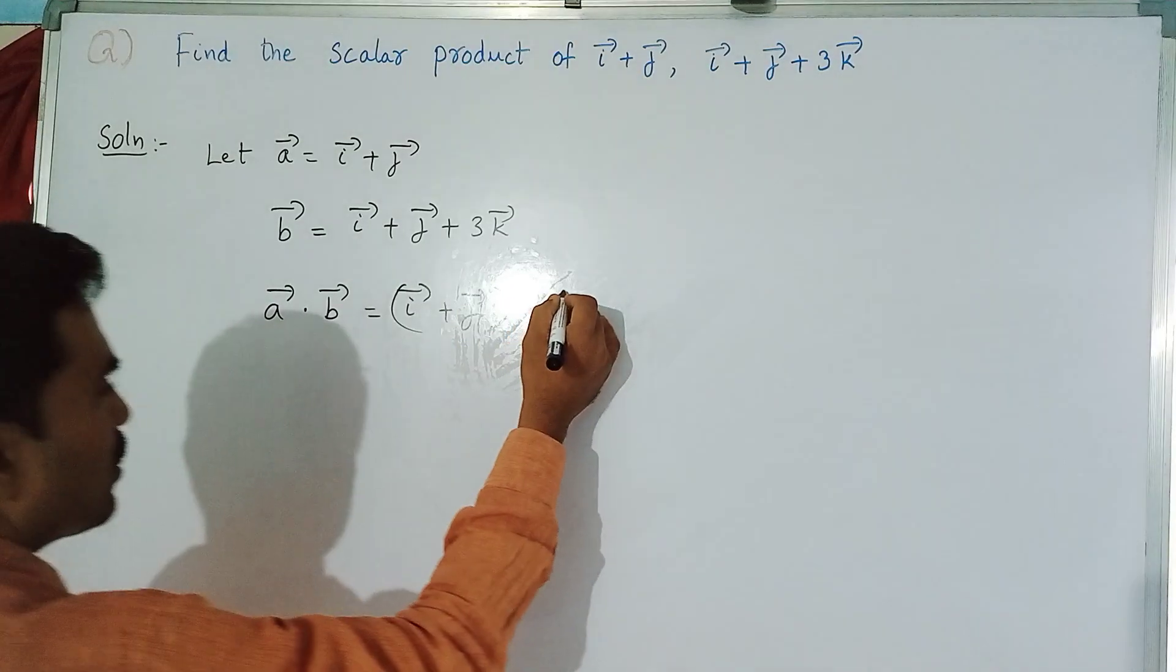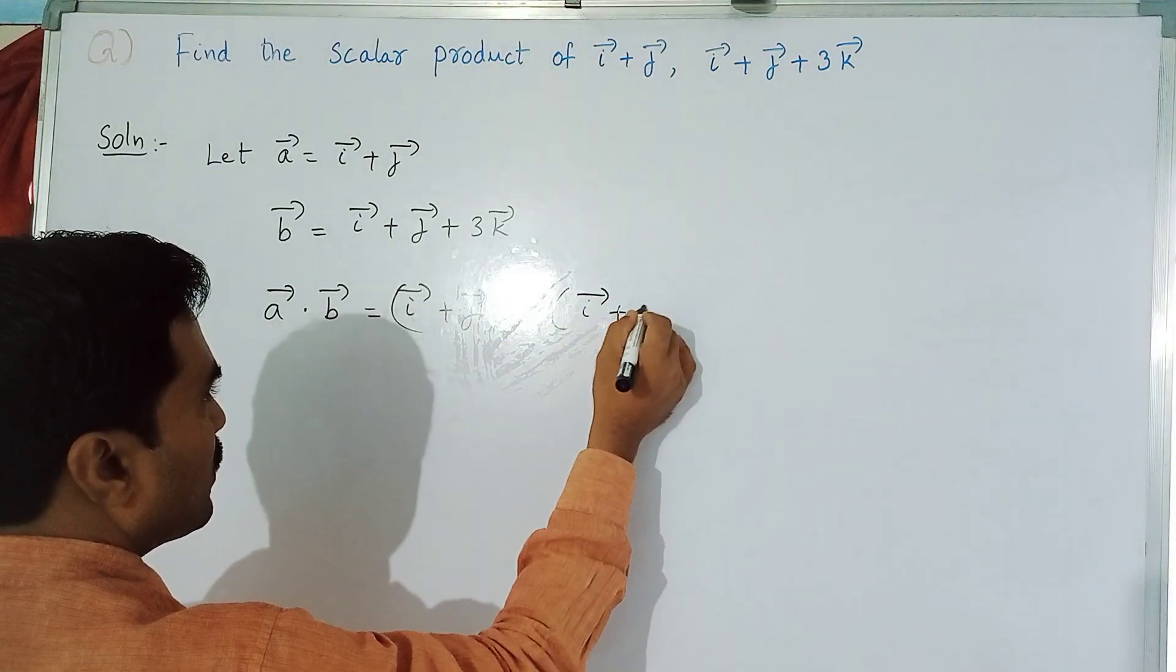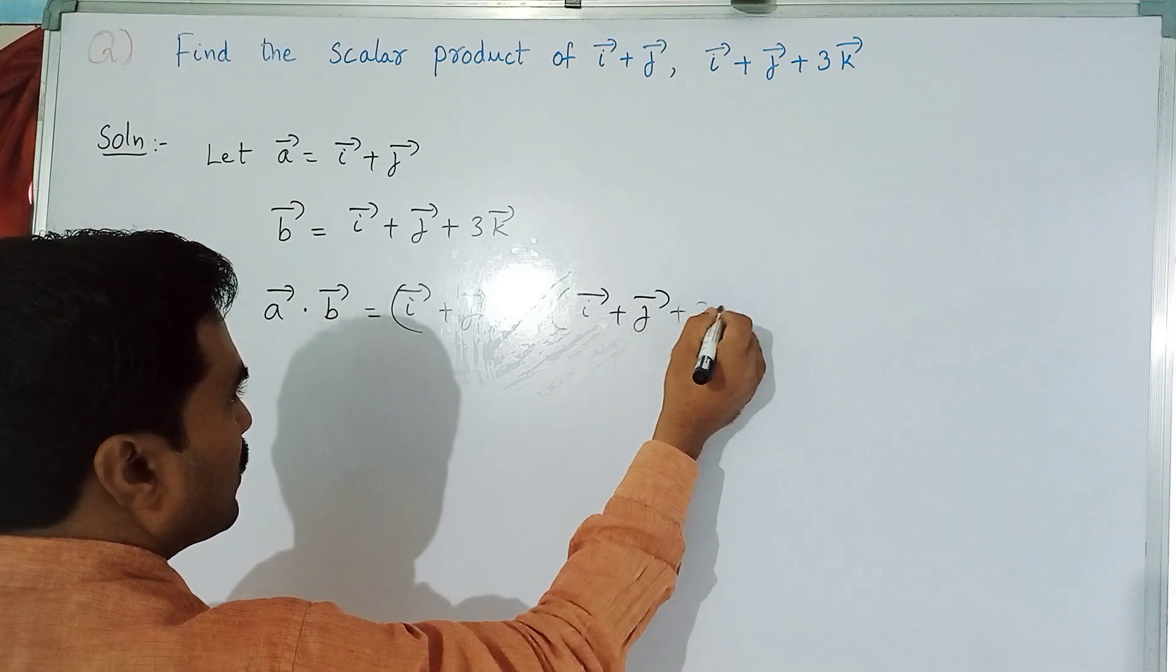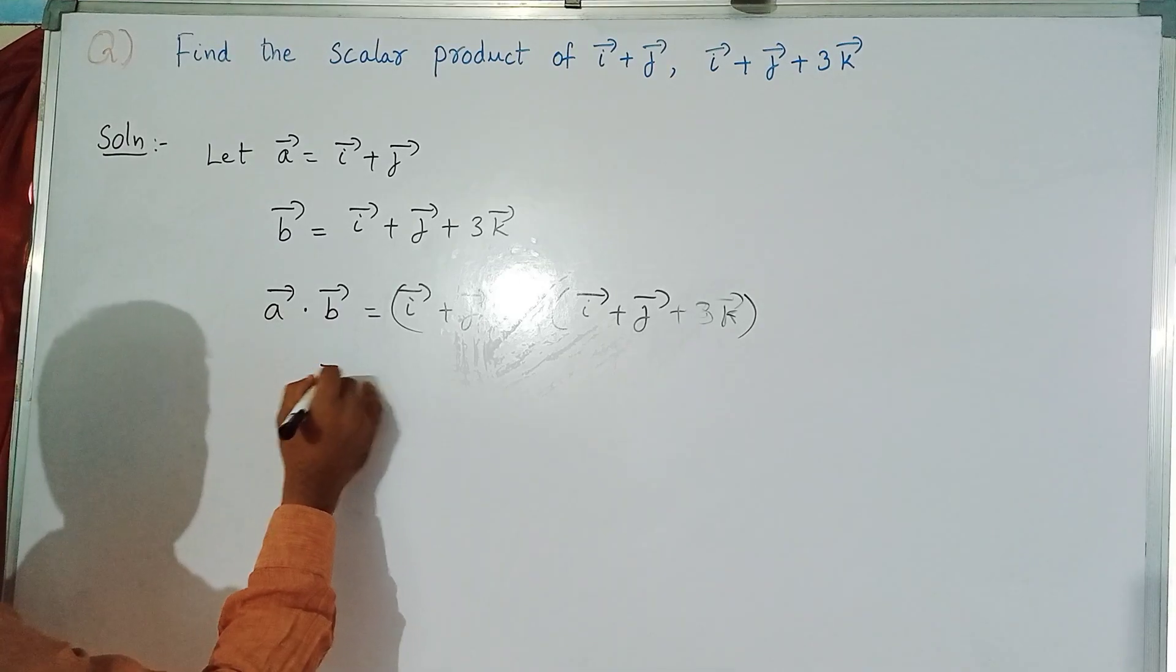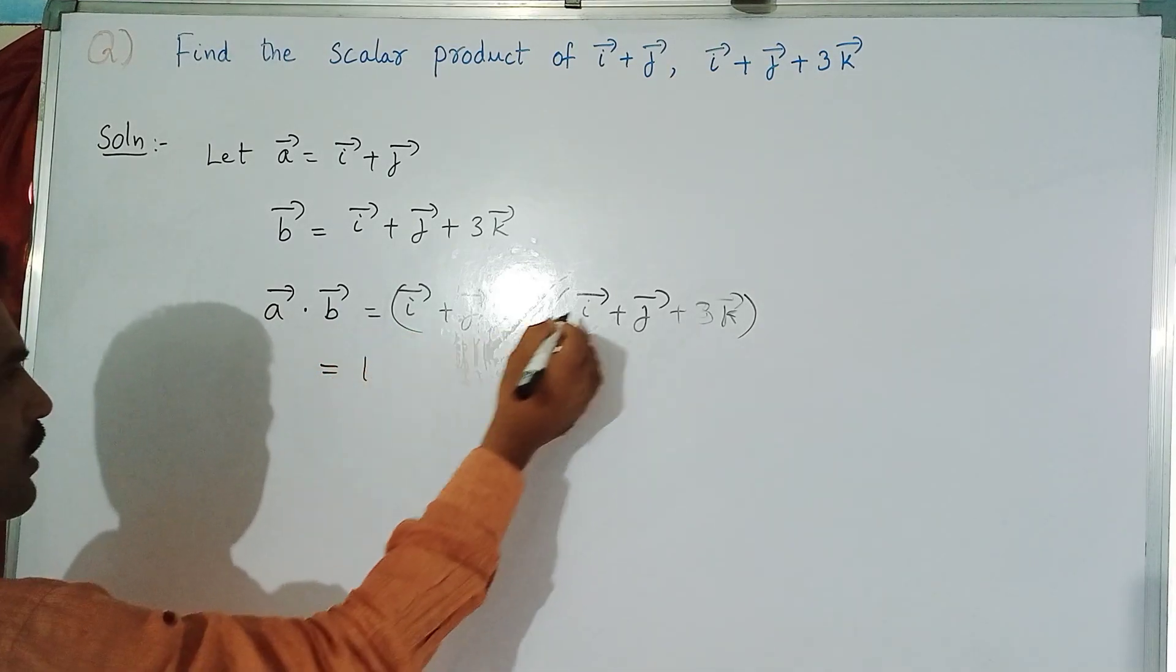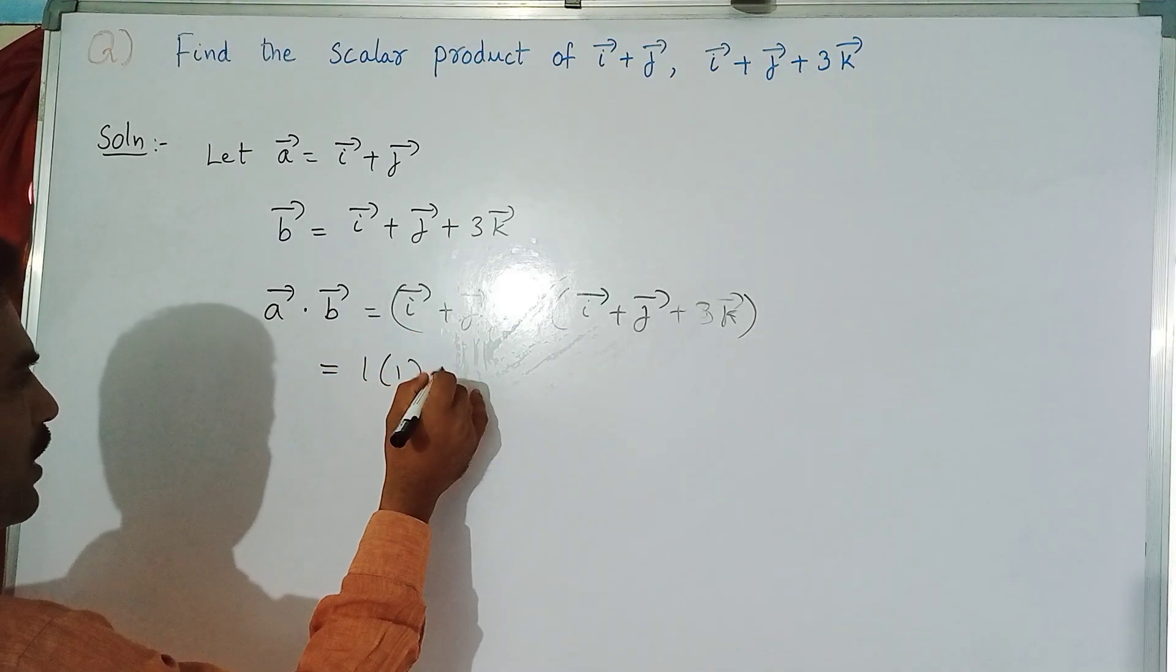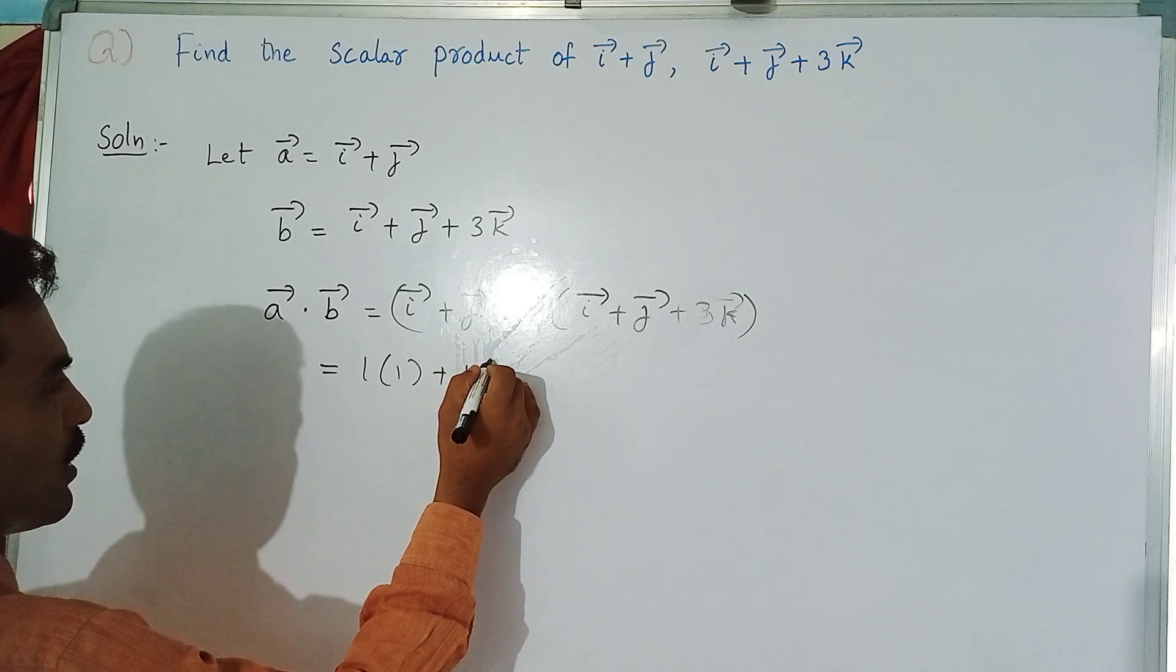Now here, i bar coefficient is 1. In this case i bar coefficient is 1. Plus here j bar coefficient is 1, and here j bar coefficient is 1.